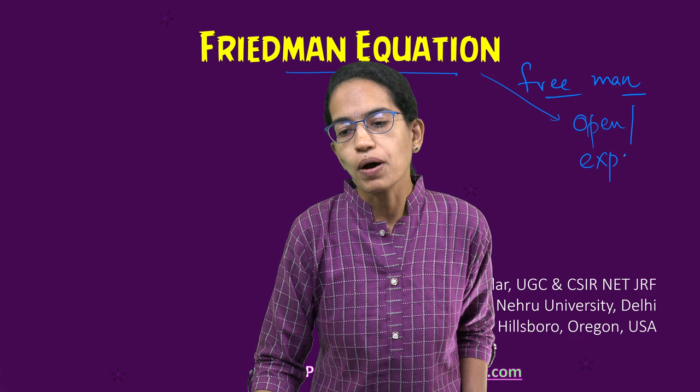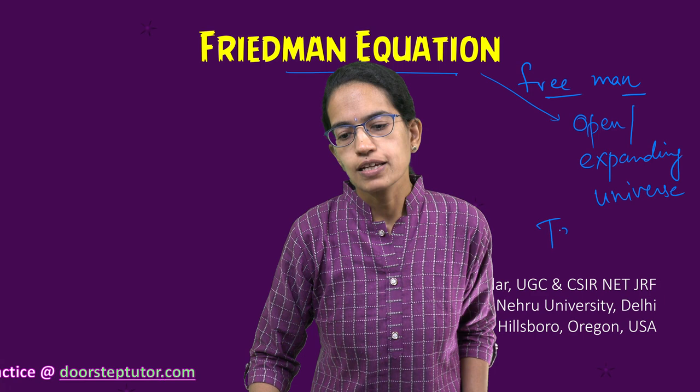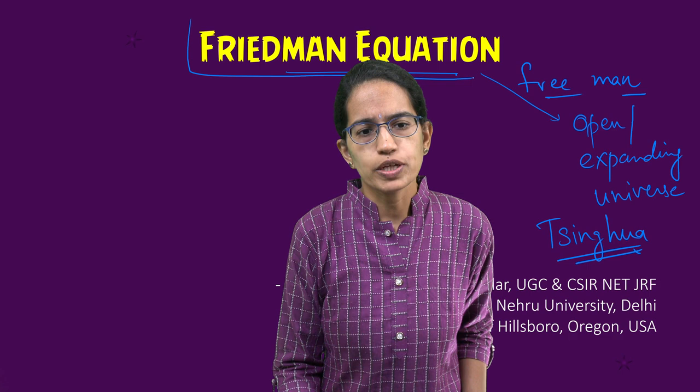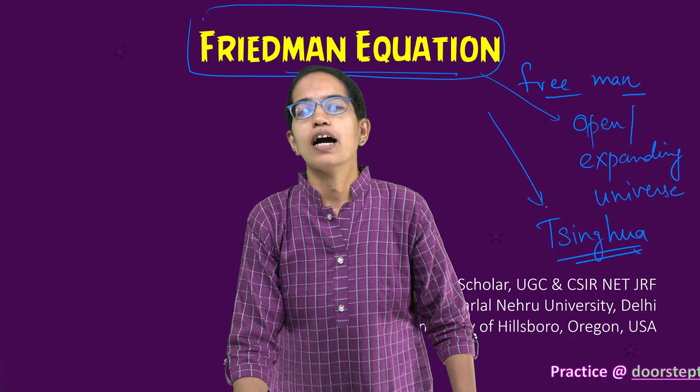Students from Tsinghua University recently brought out the issue where they brought in papers with Friedman equation written on it, and this was to denote the idea of open and expanding universe and a way of showing protest.